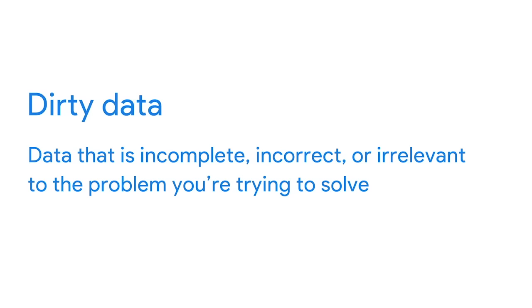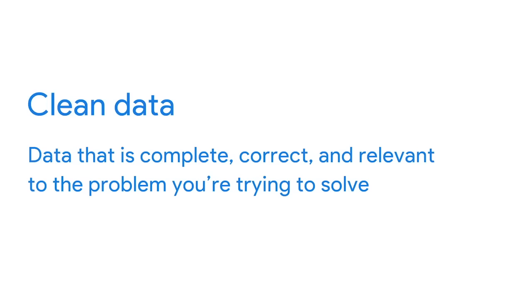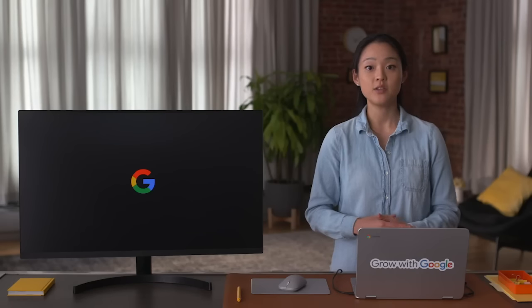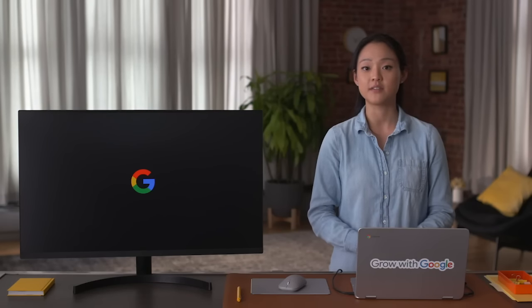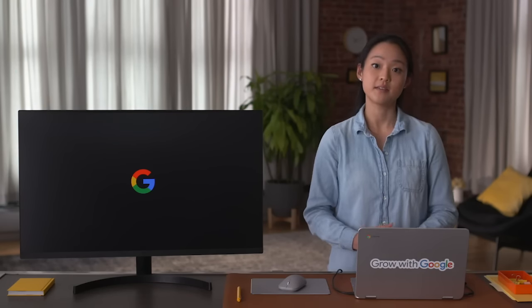Dirty data is incomplete, incorrect, or irrelevant to the problem you're trying to solve — it can't be used in a meaningful way, which makes analysis very difficult if not impossible. On the other hand, clean data is complete, correct, and relevant to the problem you're trying to solve. This allows you to understand and analyze information, identify important patterns, connect related information, and draw useful conclusions. Then you can apply what you learned to make effective decisions.